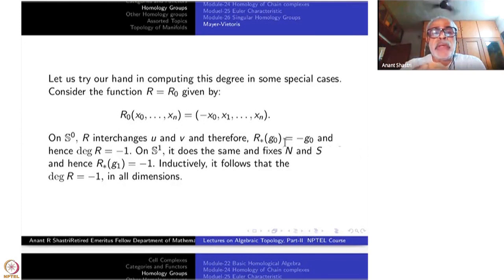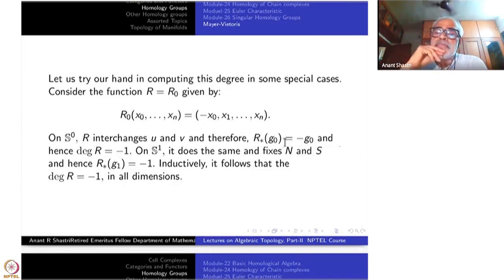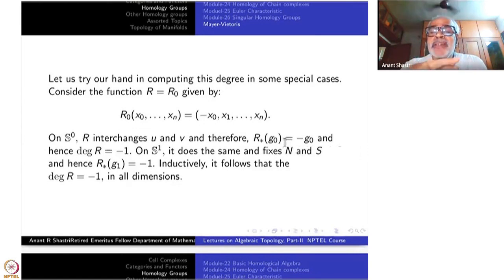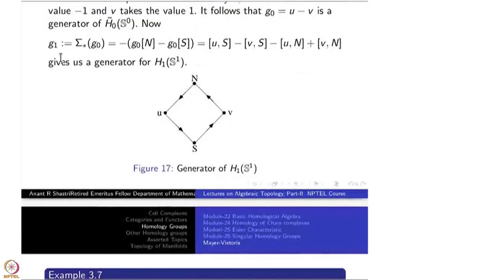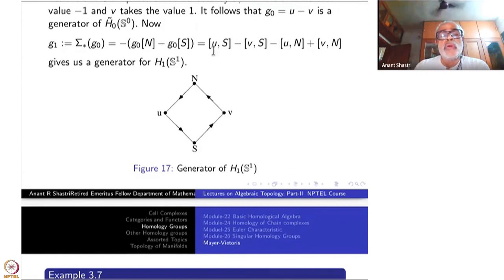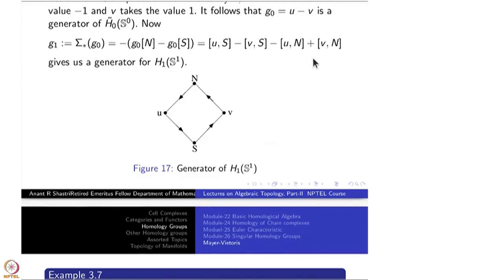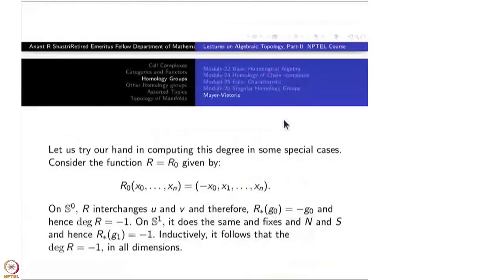On S^1, the map sends (x_0, x_1) to (-x_0, x_1), which is similar to conjugation but not exactly. On S^1 it again interchanges U and V while the North Pole and South Pole are kept fixed. Going back to the computation using sigma*(G_0) with terms U_S, V_S, U_N, V_N, since U and V are interchanging, the sign changes again. Therefore on S^1 also the degree is -1.